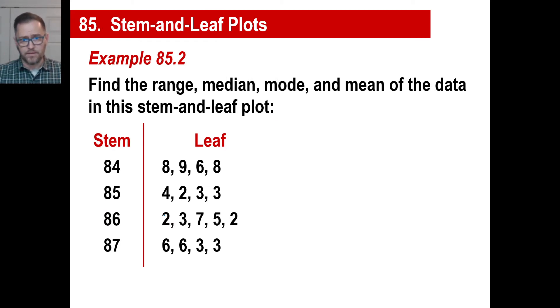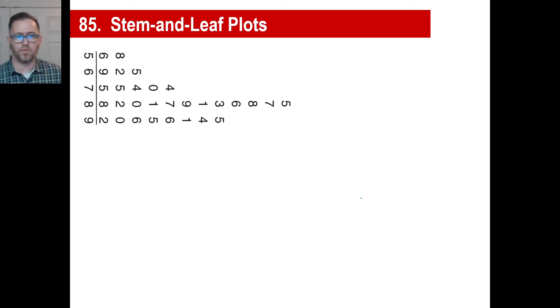This example, find the range, median, mode, and mean of the data in this stem-and-leaf plot. We're not going to bother to actually do the entire thing, but I'm just going to run through how to do this. And just, what's important is that you look at this number and you realize, well, this is the number 848. This is the number 849. This is the number 846 and this is 848 and so on. And the rest of these, of course, would be let's say, for example, this one, 862, 863 and so on and so forth. And you do exactly the same thing. Once you've got all those numbers down in the list, exactly the same thing you always do to find the range, find the median, find the mode, and find the mean. So, same old thing.